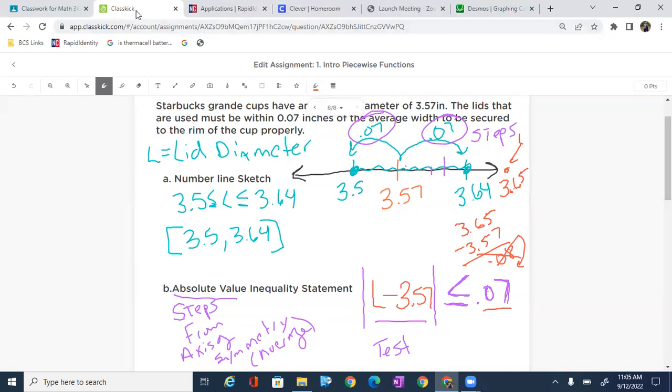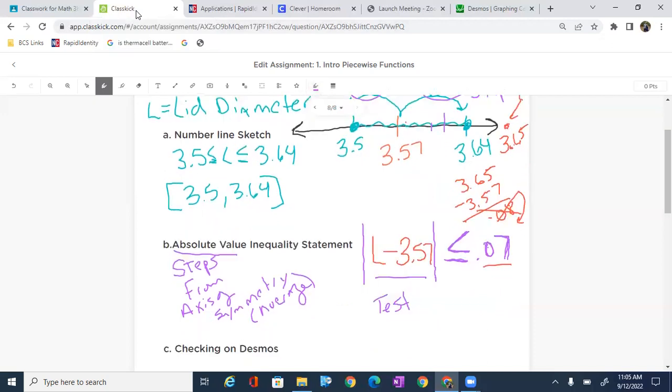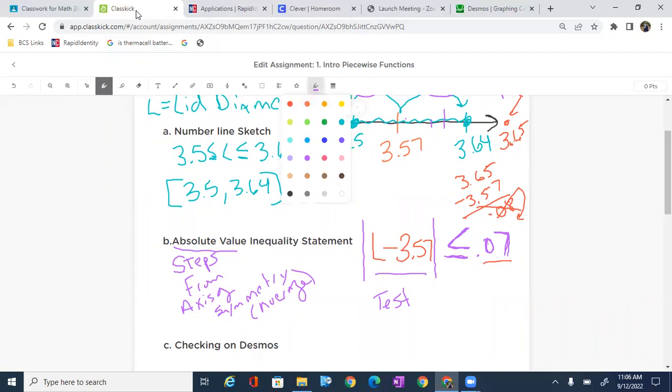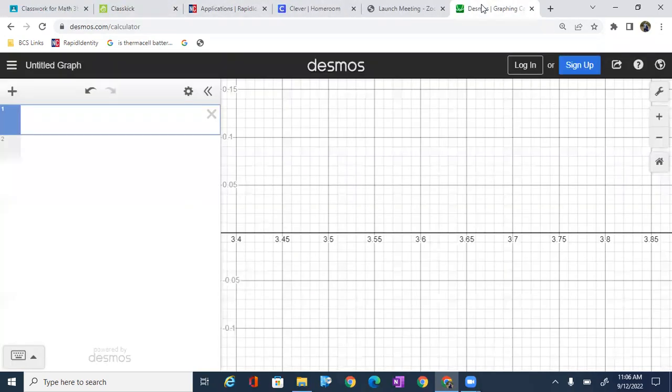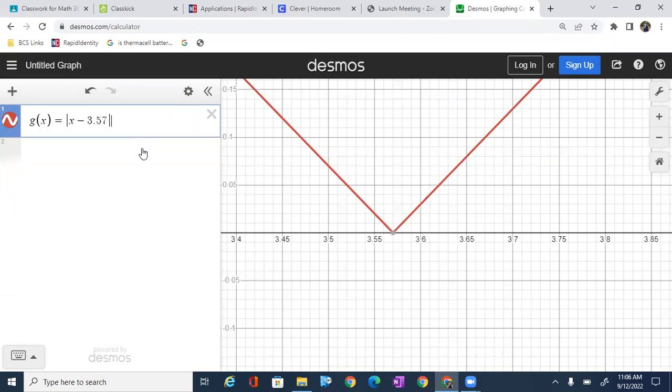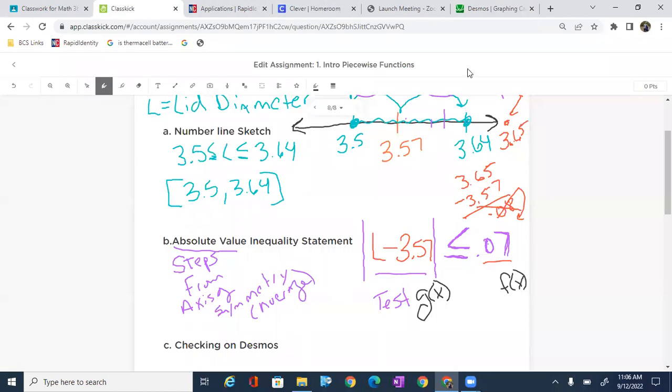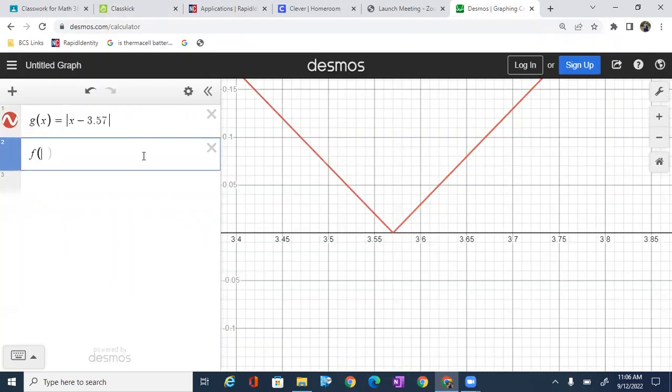Let's go ahead and check our work on Desmos. Checking our work on Desmos is pretty straightforward. I'm going to give each one of these pieces a name. I'm going to call this one G of X. And let's call this one F of X. It just helps us with Desmos. So I'm going to type in G of X equals the absolute value of X minus 3.57. Now remember, I'm using Desmos. It doesn't like all the letters, so I'm going to make sure I put an X in there. I named the other one F of X. So I'm going to say F of X equals 0.07.